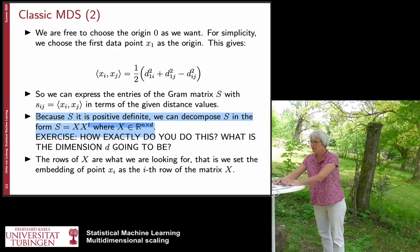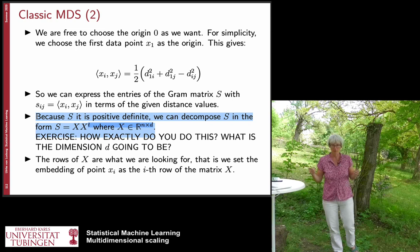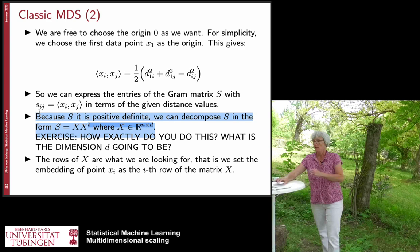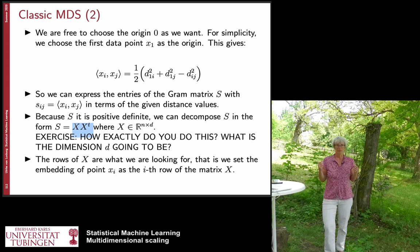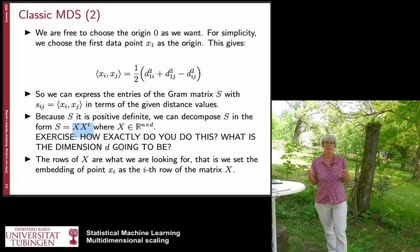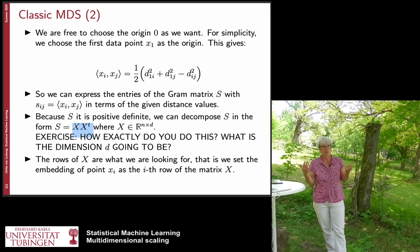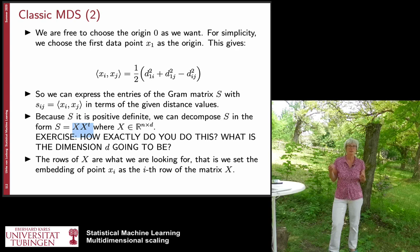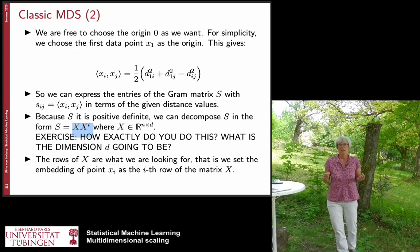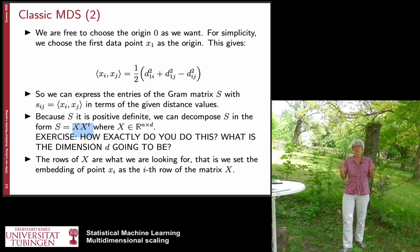Now comes the trick. We know the scalar product matrix is positive definite, so we can decompose it as X times X^T, where X is an n times d matrix — n being the number of data points and d the number of coordinate dimensions we want to embed into. Please stop the video and think about why this decomposition is possible and how you would perform it in Python. If you can't figure it out, please ask in the inverted lecture or discuss it in tutorials — it's important to get used to these matrix manipulations.